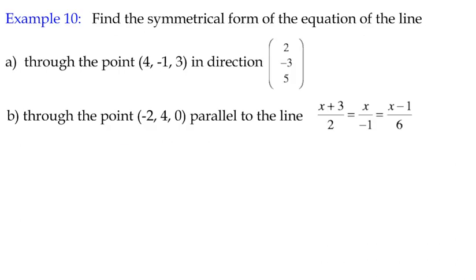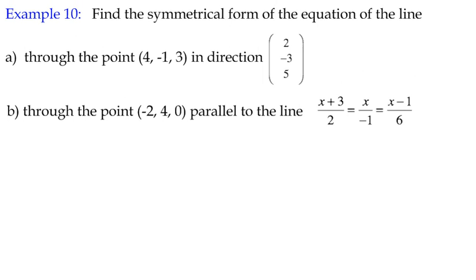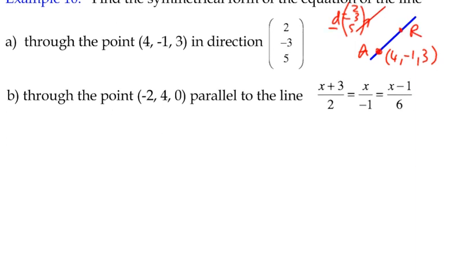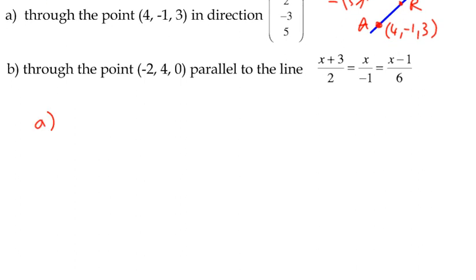So let's have a look at an example. Find the symmetrical form of the equation of the line. First of all, through a point in a given direction, and then through a point parallel to another line in that form. So we're still talking about the idea of some line that we've got which is parallel to some line for which we know the direction. In this case, we're given it in vector form already: two, negative three, five. And we know the point a is four, negative one, three. The good news about symmetrical form is that we don't actually need to start with the vector form of the line.